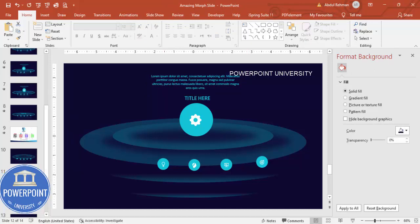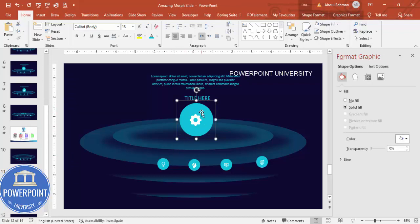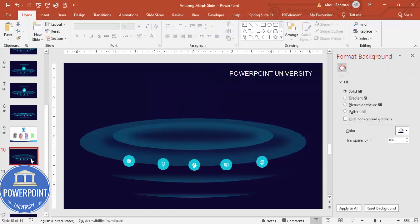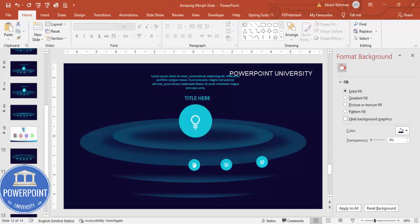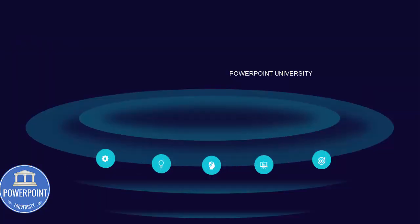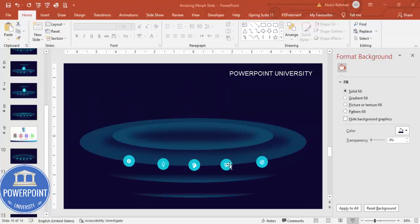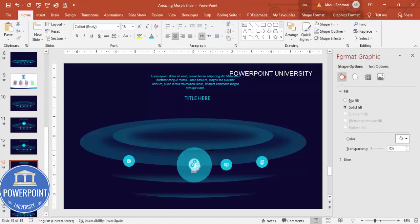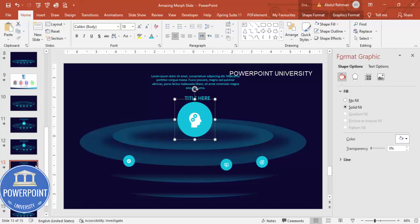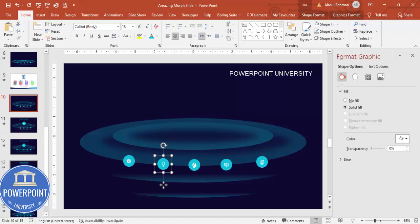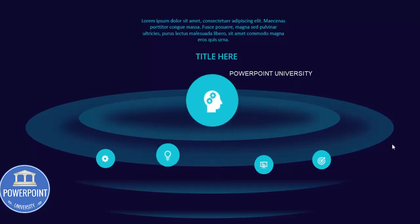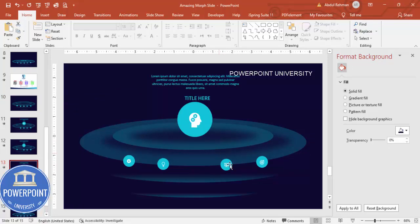Duplicate the slide for each option. On each duplicate, delete the enlarged option group, select the next option circle, increase its size, and move it to center. Then copy the original option circles from slide one and paste them onto each detail slide to maintain navigation. Repeat this process for all five options — projection, target growth, time bound, and services — and that's how the morph transition company profile works.